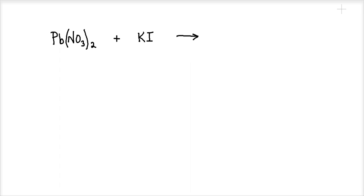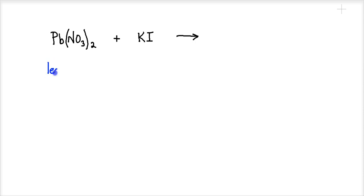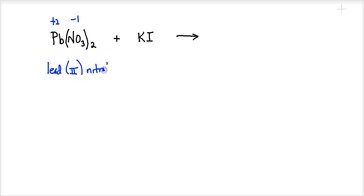What I have here is the start of a double replacement reaction. Before we predict the products and see if a precipitate occurs, we have to evaluate whether this will react. The first compound is lead(II) nitrate — each nitrate ion from Table E is negative 1, and there are 2 of them, so lead must be plus 2. The second compound is potassium iodide, using the IUPAC naming system — binary, so it ends in -ide.